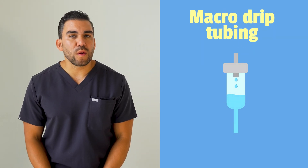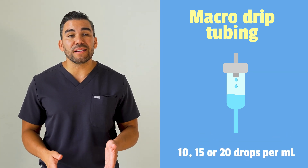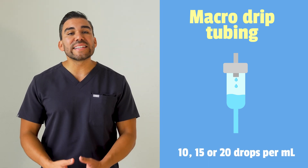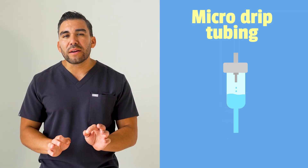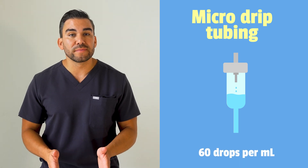Now there are two main types of IV tubing that you'll encounter. The first is macro drip tubing — wider tubing with larger drops, typically 10, 15, or 20 drops per mL. Next is micro drip tubing — narrower tubing with smaller drops, usually 60 drops per mL. Knowing which type you're using is crucial for accurate calculations.